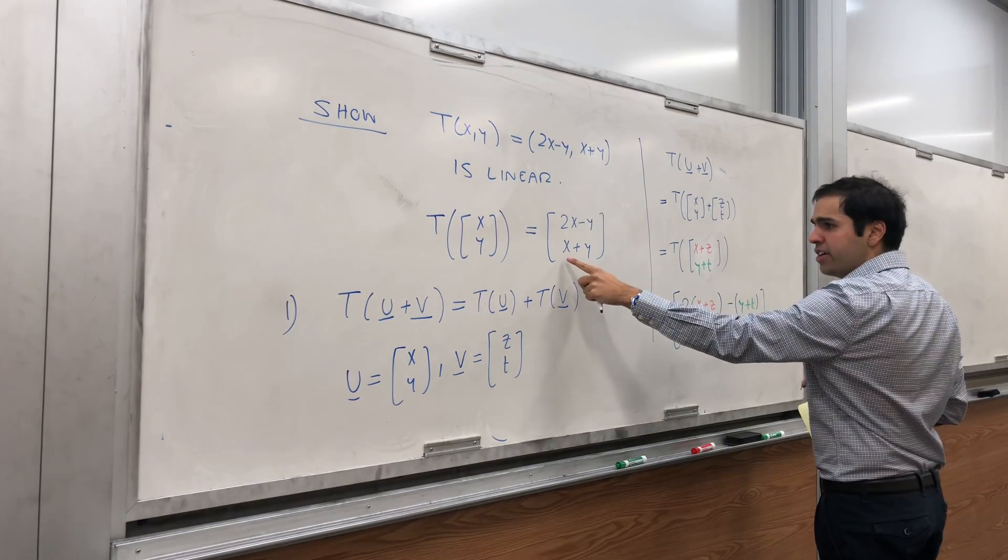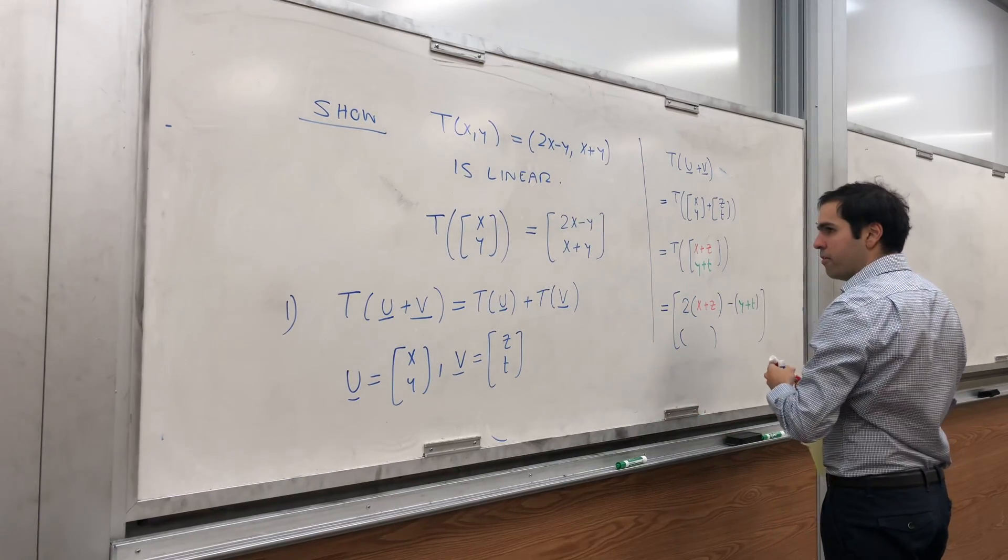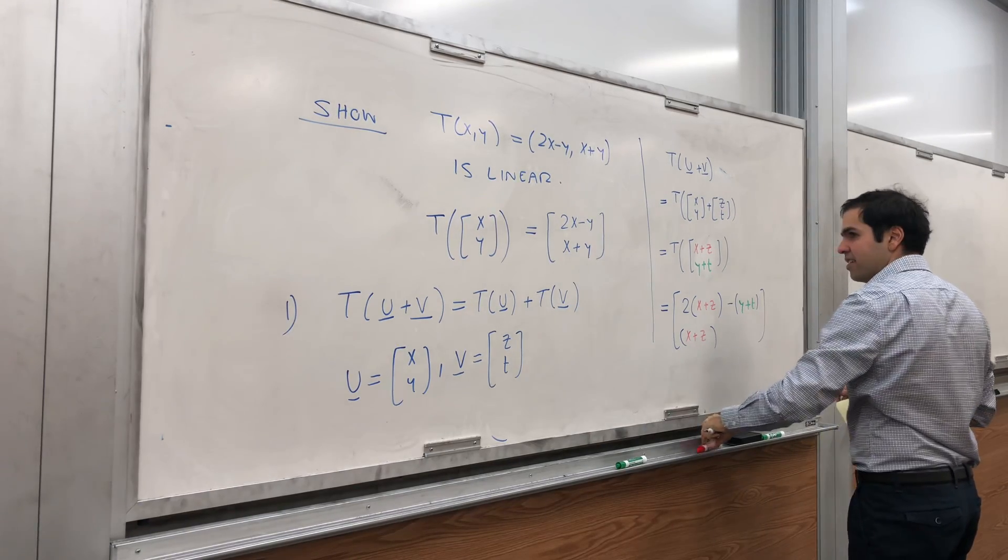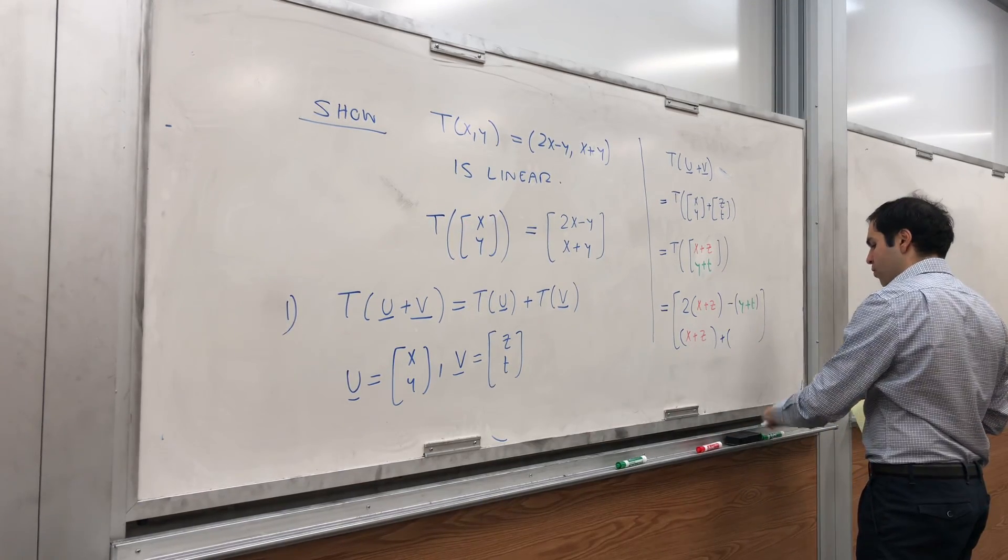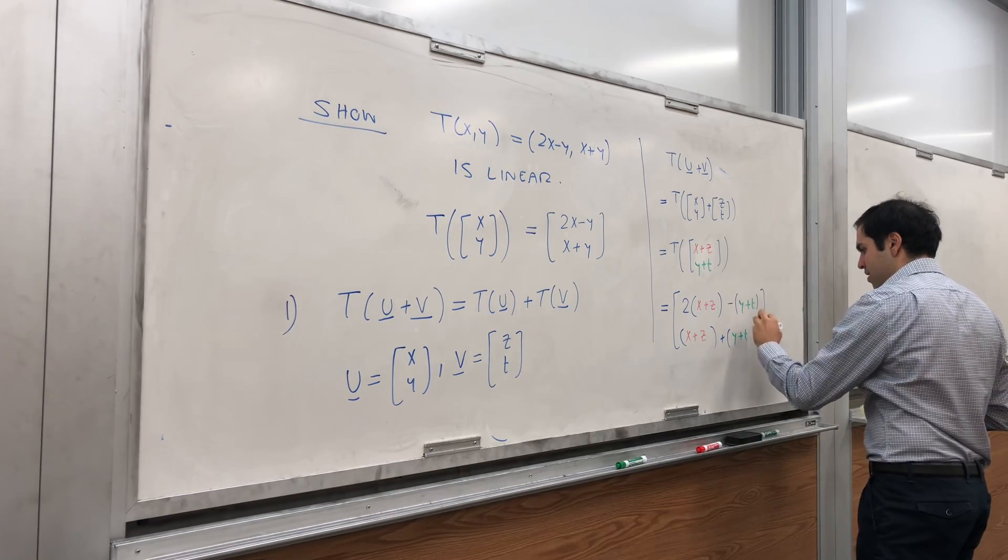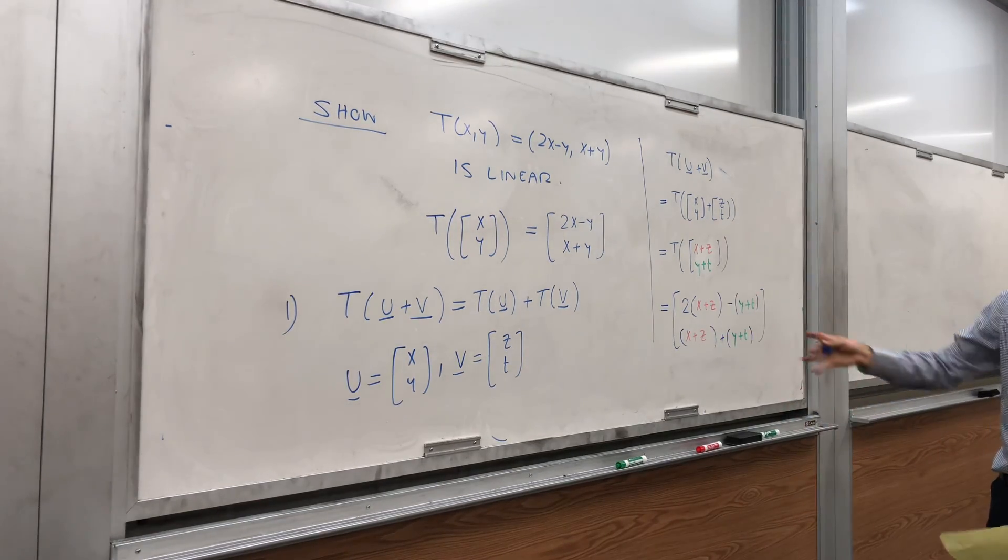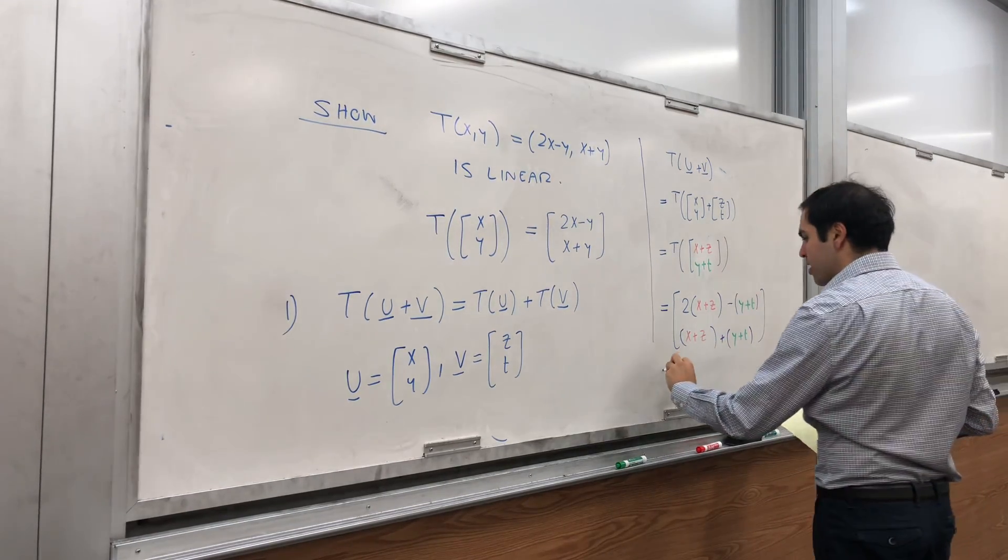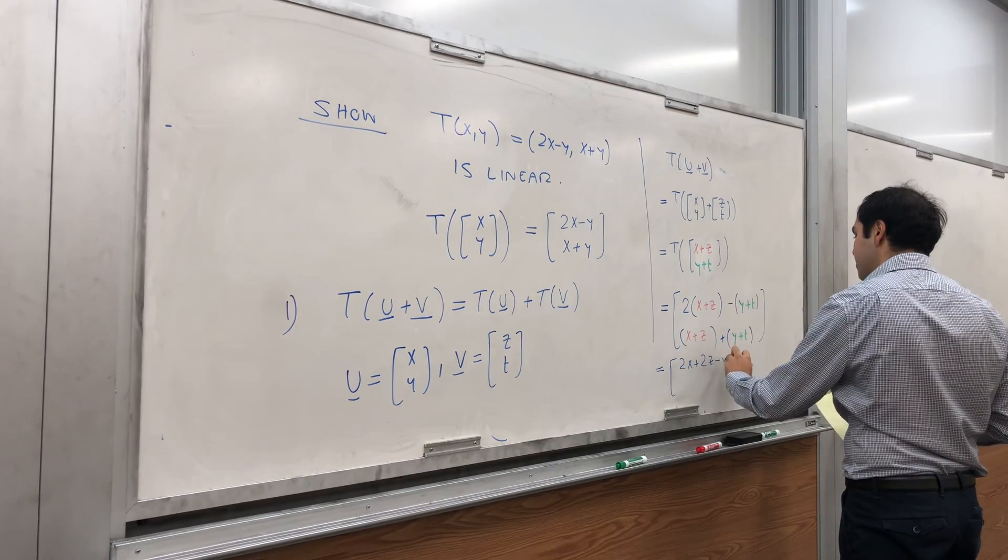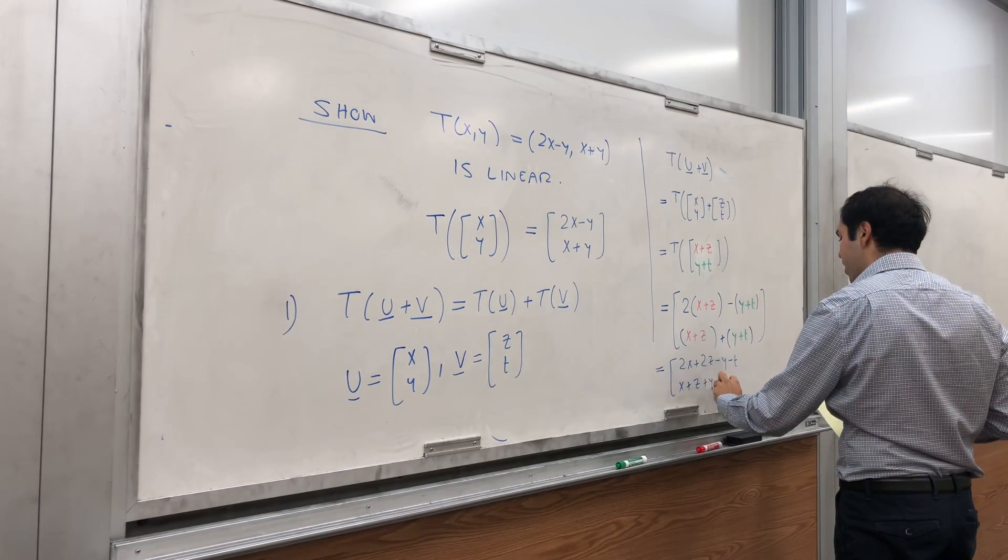And similarly here, it takes the first component and the second component and adds them together. So (x + z) + (y + t). Okay, very good. Then the next step is generally just to expand it out. So we get 2x + 2z - y - t and x + z + y + t.